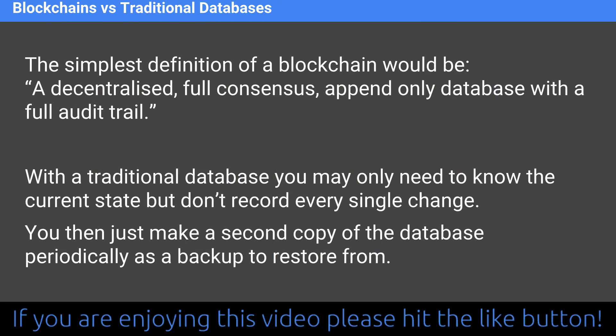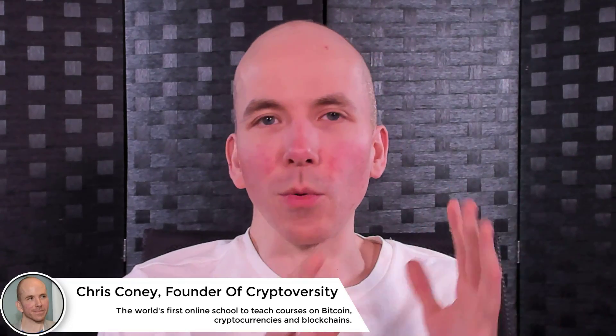That's how you get a full audit trail — but you have to save all that data, which is the bloat we're talking about. With a traditional database, you may only need to know the current state; you don't need to record every single change historically. Instead, you make a backup periodically. The backup is like a snapshot in time — a daily backup, for example. Most businesses keep a 30-day archive, so you can go back up to 30 days in the past relatively cheaply.